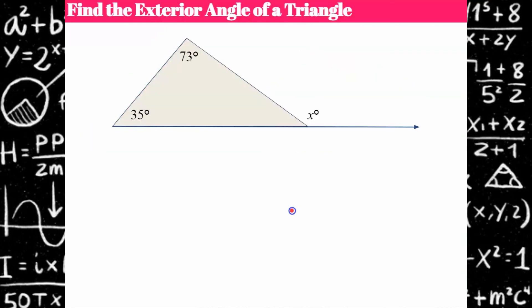So let's go ahead and use this. So now we want to find this measure of x. And I know that it's equal to the two non-adjacent angles. So remember this is adjacent to this. This exterior angle, these are the two non-adjacent angles. So if I add them up, 35 plus 73 is 108. So this is 108 degrees.